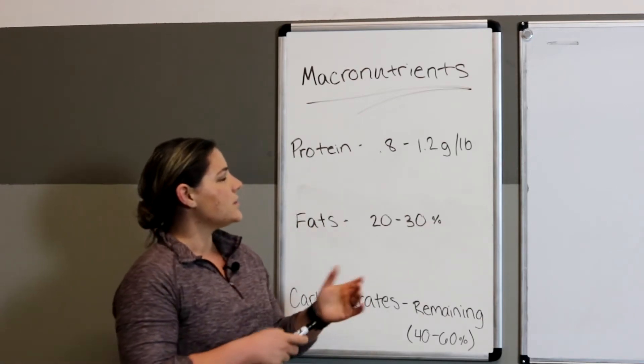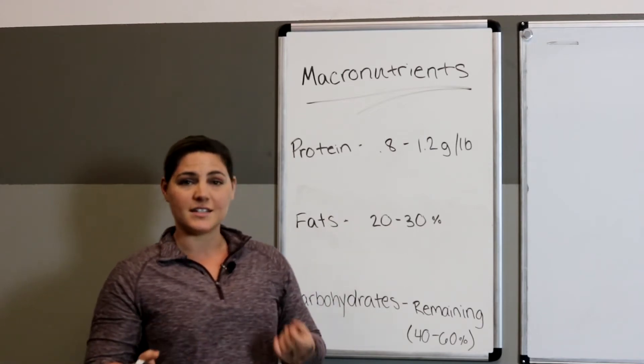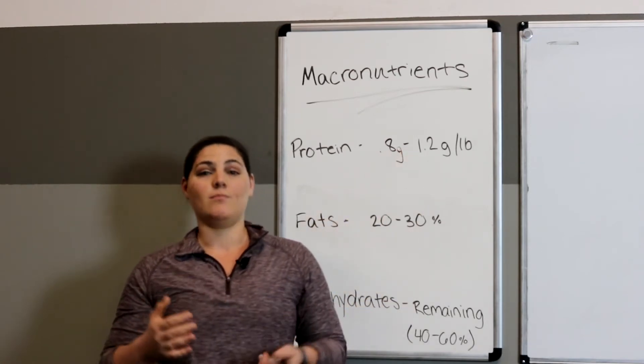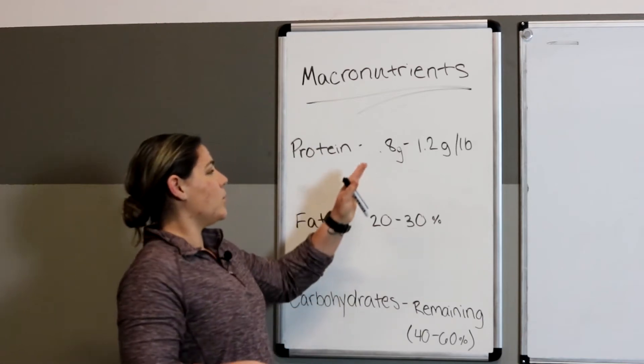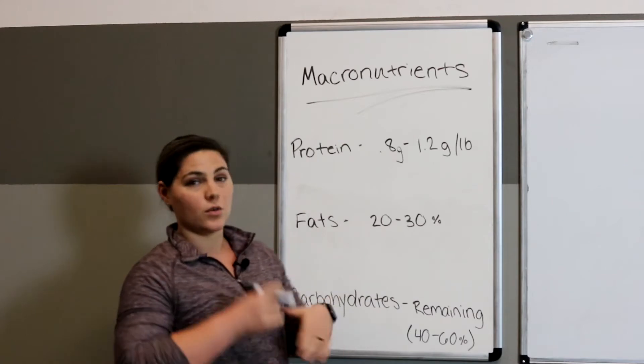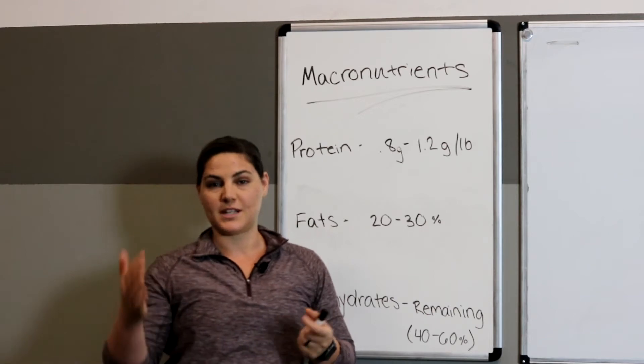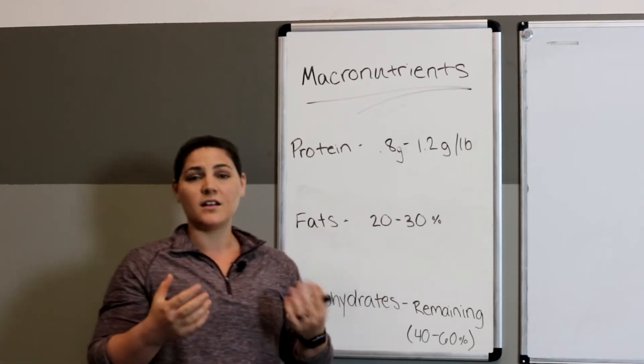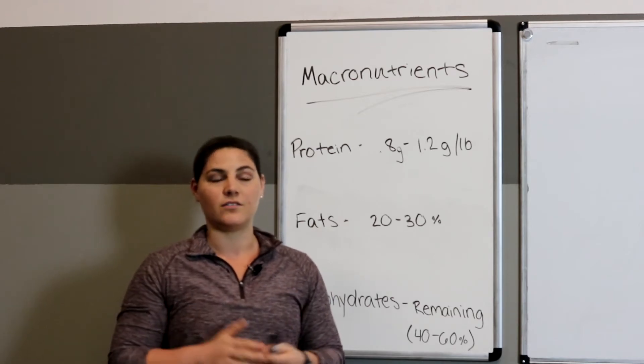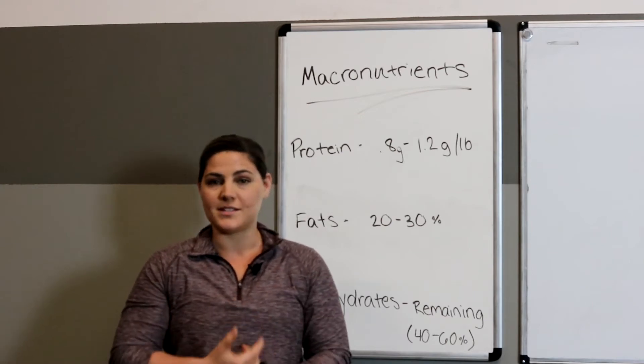So when going to determine the amount of protein that you need in your diet, it's a good idea to use this equation right here. You're going to take your body weight and multiply that by 0.8, and that's the low end of protein that you should be aiming to hit. And you should also take the high end, multiply it by 1.2, and that's the high end of protein that you should be taking. So if you fall within that, as far as grams per day of protein that you're taking, that's a pretty good baseline of what the research shows is great for performance and overall health.